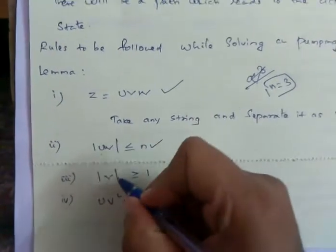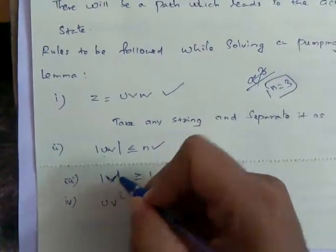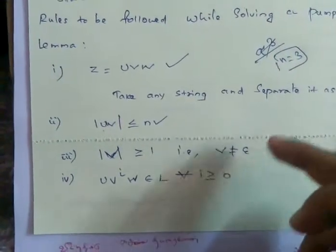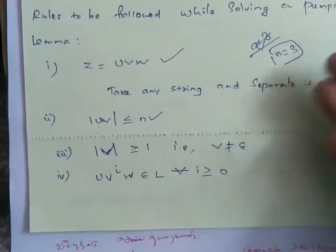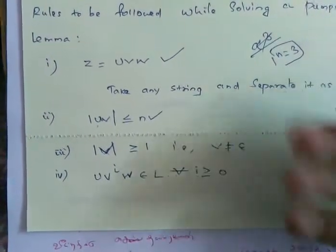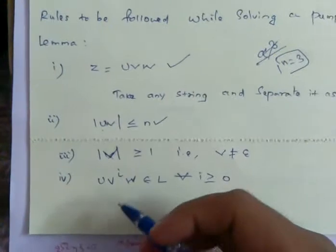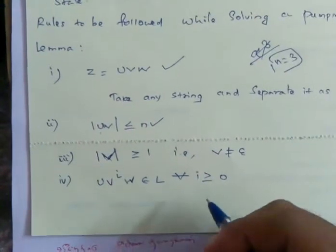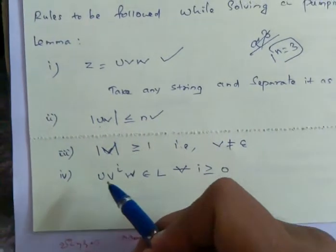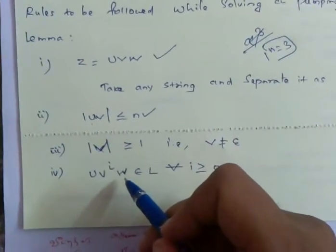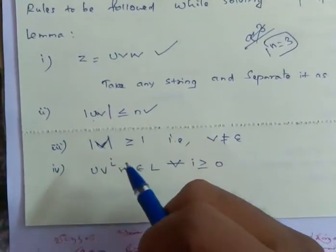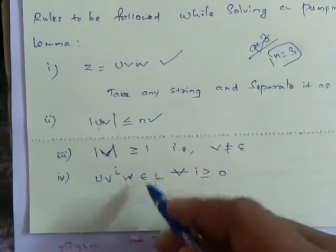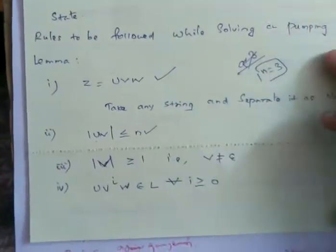The third rule is: the modulus of v is greater than or equal to one, meaning v cannot be an empty string. The fourth rule is: after applying all the above rules, we apply uv^i w ∈ L for all i greater than or equal to zero. Apply v^i for any value and check whether the resultant string belongs to the language or not.